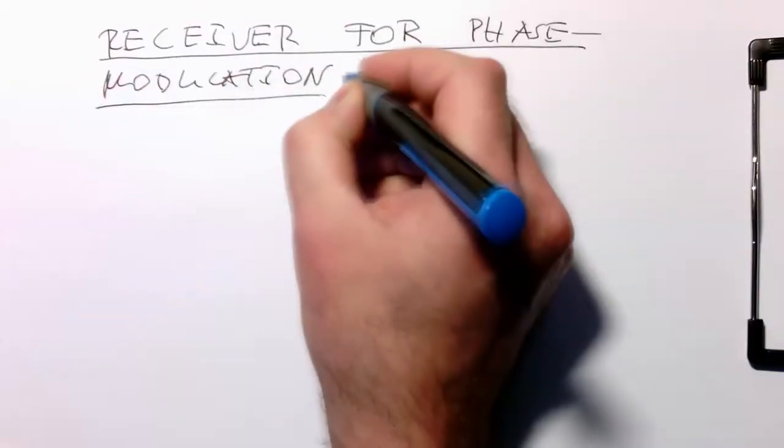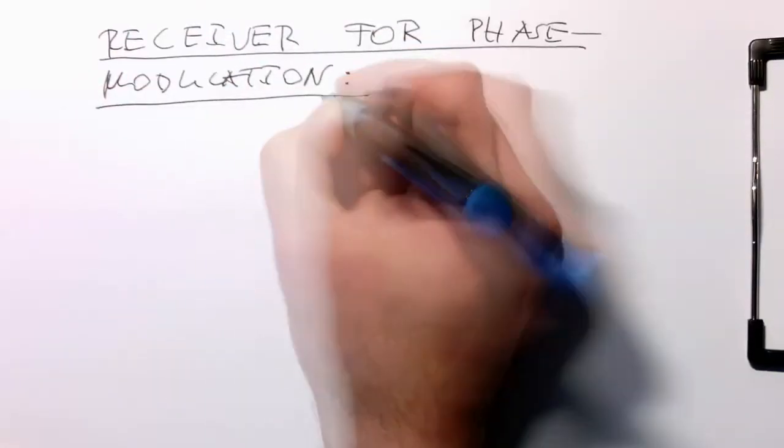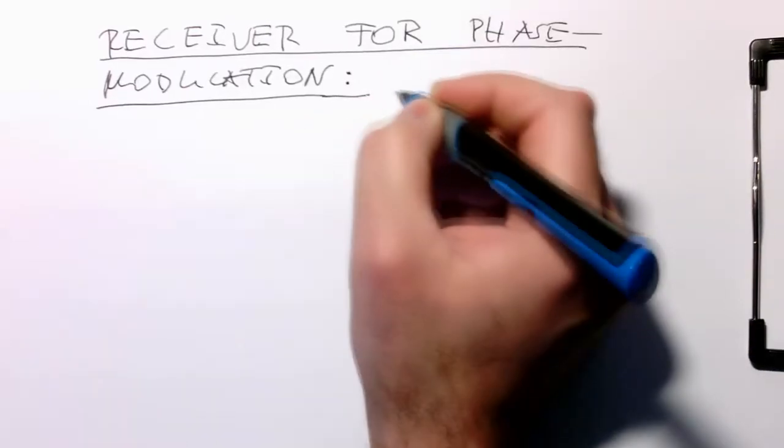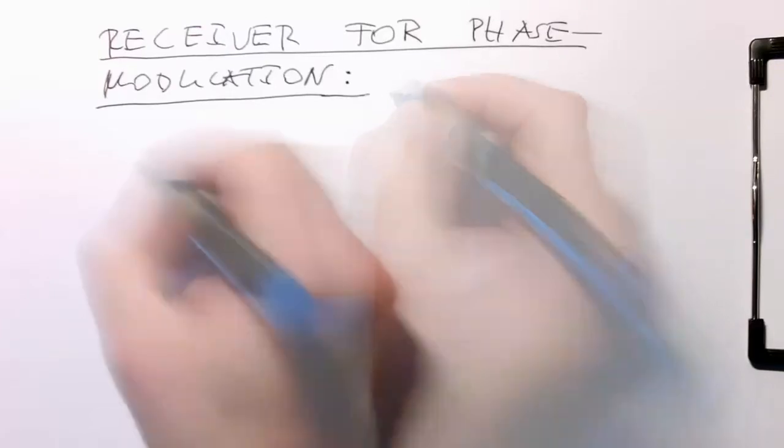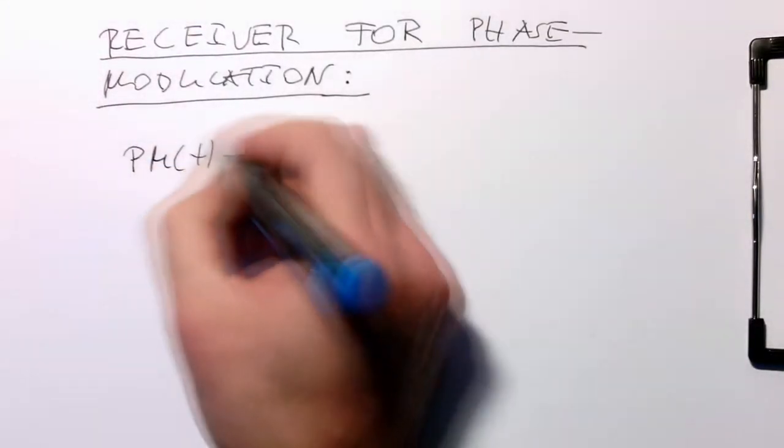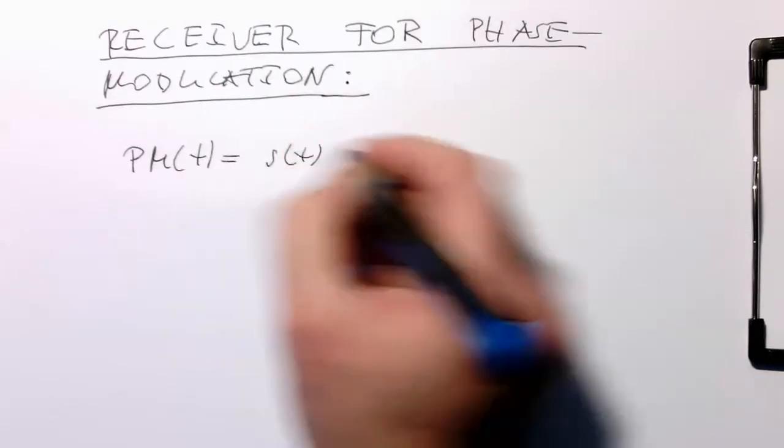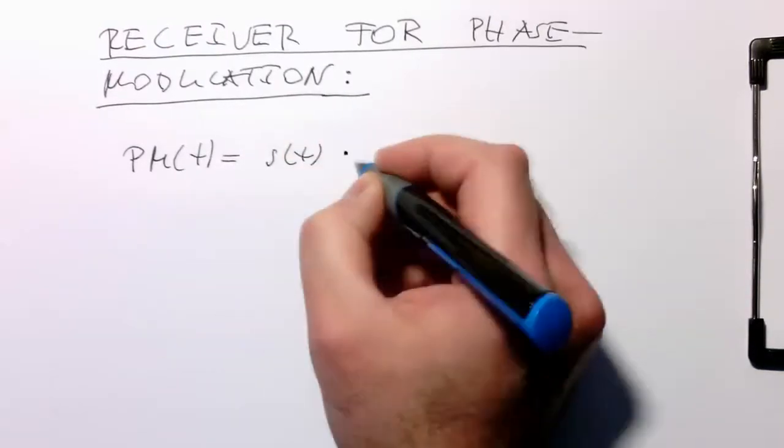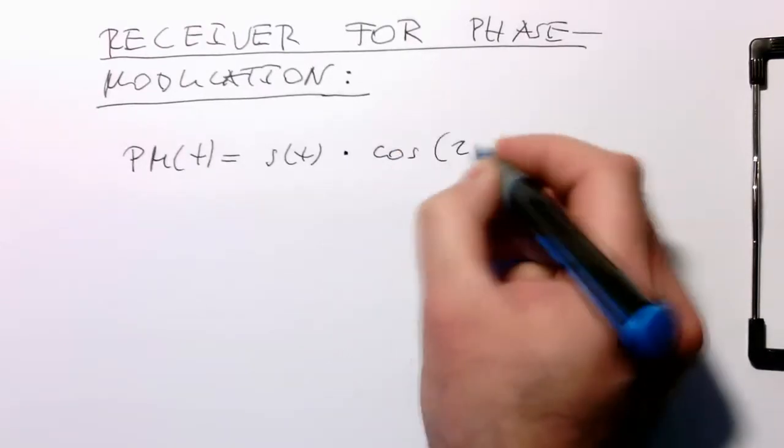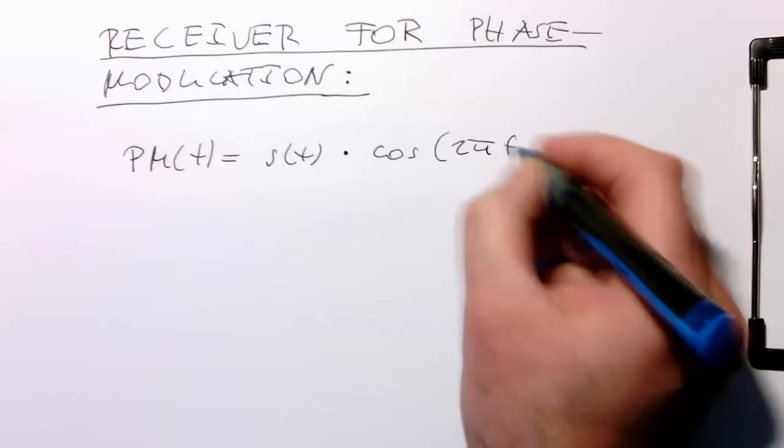This is much easier and more elegant than using an AM signal. Remember, our phase modulated signal PM(t) is our symbol stream—just minus ones and plus ones, for example—multiplied by the carrier cosine 2π fc t.